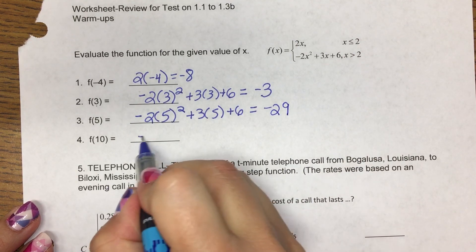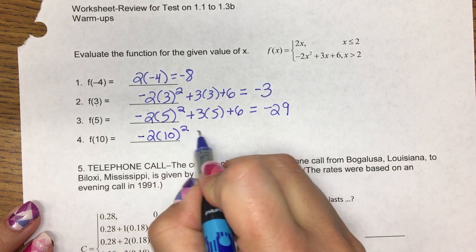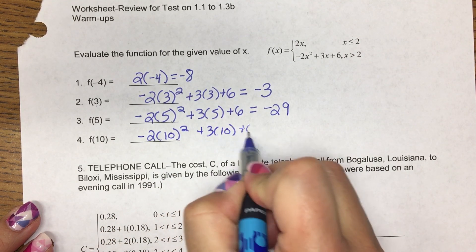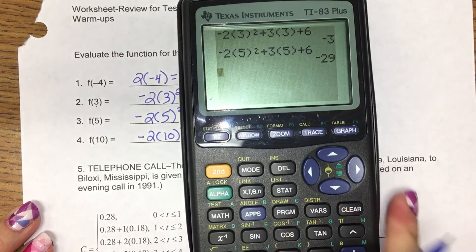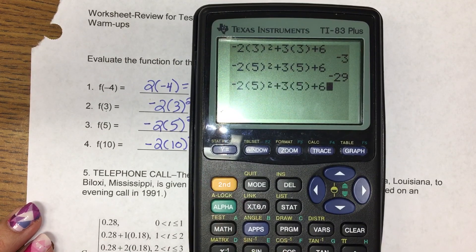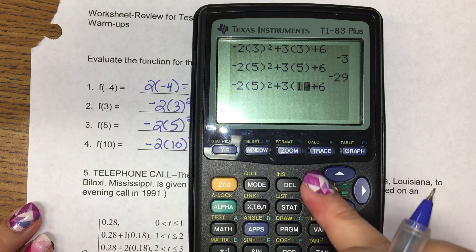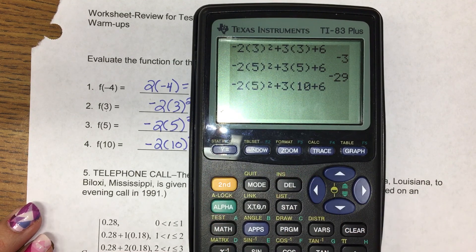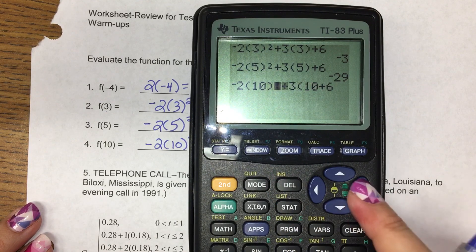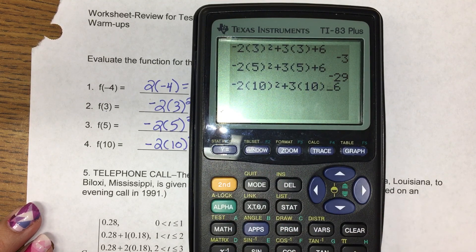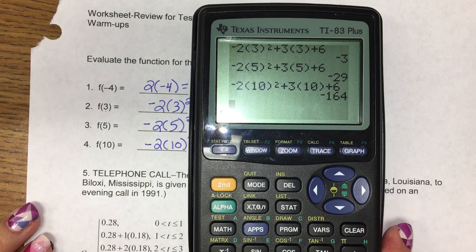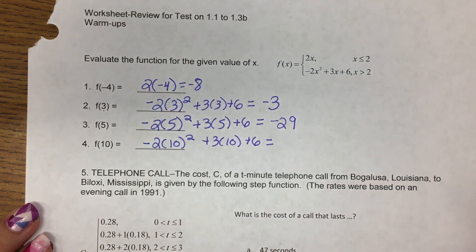And 10 is greater than 2, so it goes into that bottom piece again. 2nd, enter, brings back up what I typed. If you do 2nd, delete, it allows you to insert. So that way when you type over a double digit, you get more space. That's negative 164.